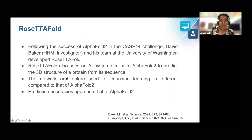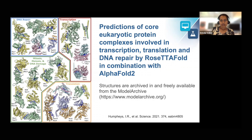Following the success of AlphaFold2 in the CASP-14 challenge, Howard Hughes Medical Institute investigator David Baker and his team at the University of Washington developed RosettaFold. RosettaFold also uses an AI system similar to that of AlphaFold, but the network architecture used for machine learning is different. The prediction accuracies of RosettaFold approach that of AlphaFold2. RosettaFold has been applied in combination with AlphaFold2 to predict the complex structures of core eukaryotic protein complexes, which are archived and freely available from the Model Archive at the Swiss Institute of Bioinformatics.